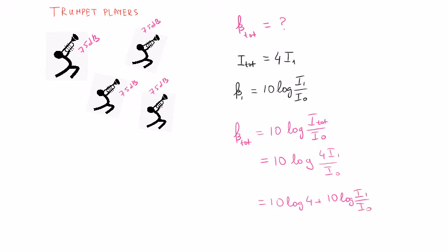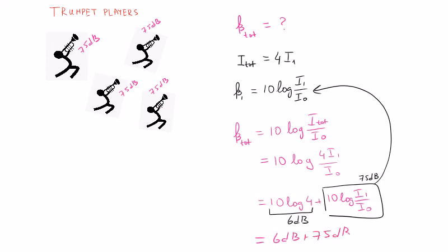I already know that the second term is actually the sound level for one trumpet, and that equals 75 decibels. So all I need to do is plug in 10 log 4 in my calculator, which will give me 6 decibels. Adding both of these together, I will get 6 plus 75 decibels, and that will give me 81 decibels.